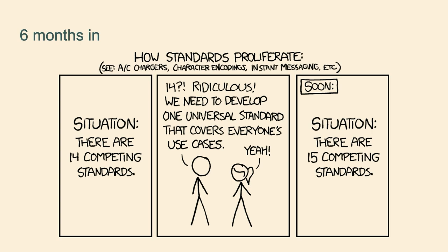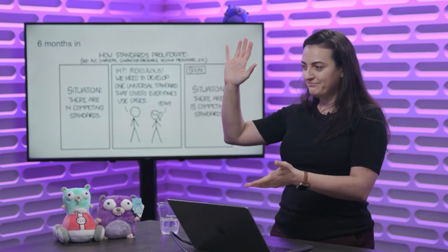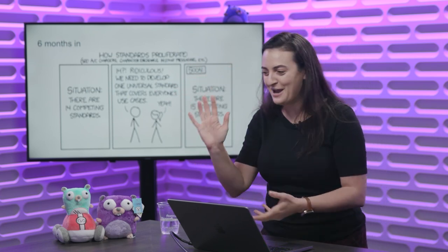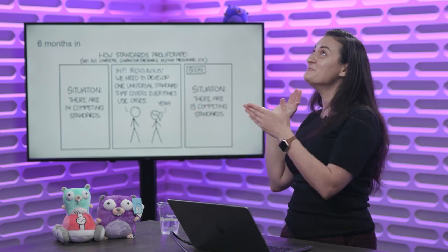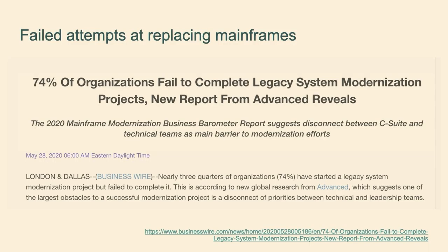We found a 20-to-30 page master document from somebody who had been working in mainframes for a long time — essentially a 20-page warning label saying: are you really sure you want to do this? Because everybody's tried. And there's data from last year showing 74% of organizations fail to complete their legacy system modernization efforts. Do they all need to fail? Absolutely not. But there's chronically underestimating how challenging it is to fully understand a legacy system before you try to replace it, and not understanding all the resiliency that was built up over time.